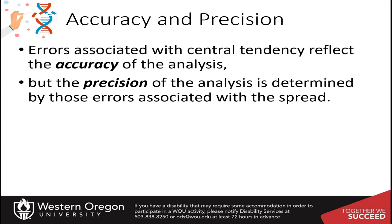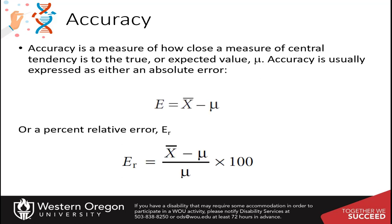Accuracy is a measure of how close a measure of central tendency is to the true or expected value, which we call mu. Accuracy is usually expressed as either an absolute error or a percent relative error. For the absolute error, we take our measurement — the mean of our data — and subtract the true value, mu.